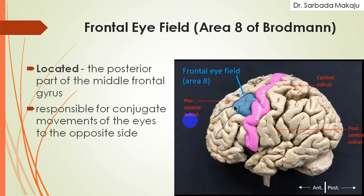One more area present in the frontal lobe is area number 8, also known as the frontal eye field. It is located just posterior to the middle frontal gyrus, which is present in the frontal lobe. The function of the frontal eye field is that it is responsible for the conjugate movements of the eyes to the opposite side.